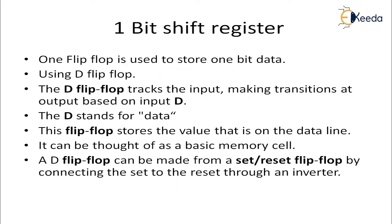For a 1-bit shift register, we need one flip-flop. Which type? The simple type of flip-flop is the D flip-flop. It will track the input and make transitions at the output based on your input. D stands for data — people also call it a delayed flip-flop, but for easy understanding, D stands for data. Whatever data is at the input will be at the output.